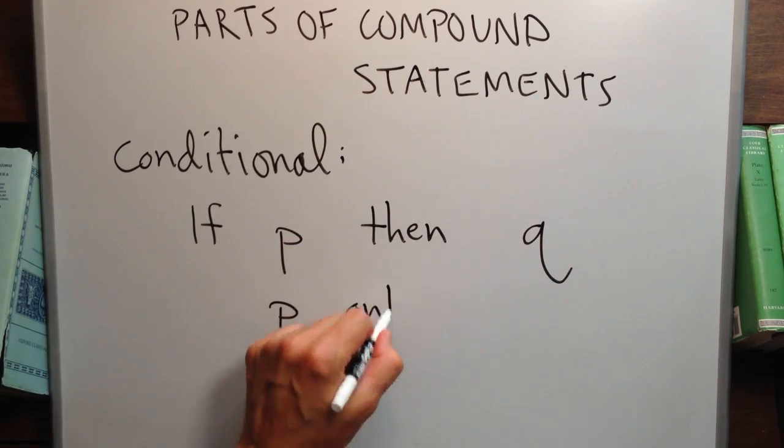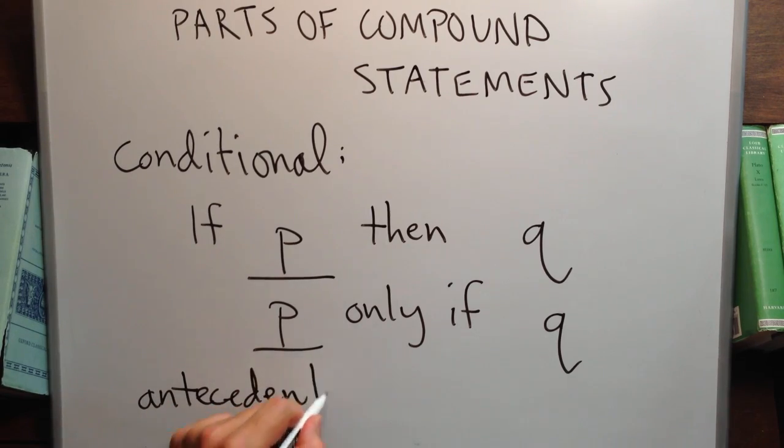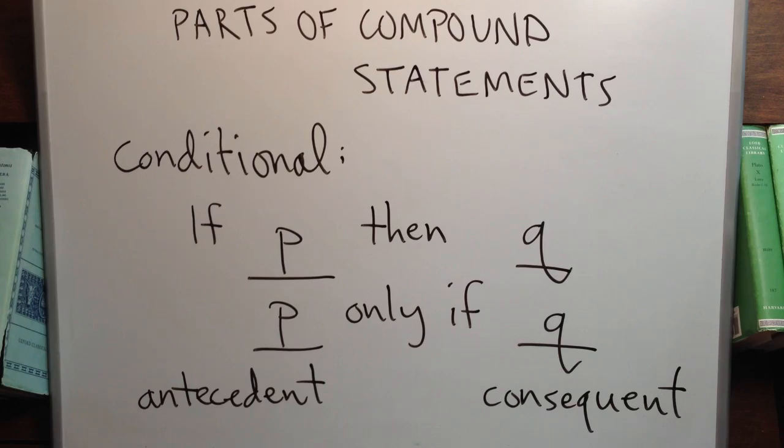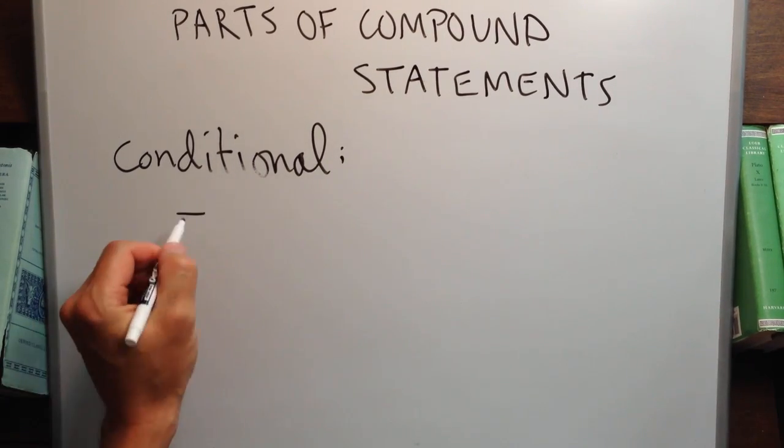In a conditional, the part that goes after the if or before the only if is called the antecedent. The part that goes after the then or after the only if is called the consequent.